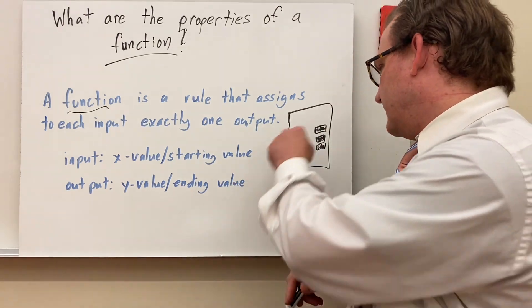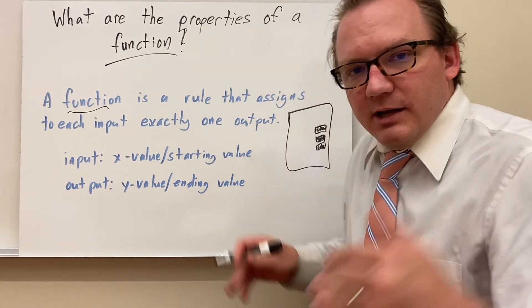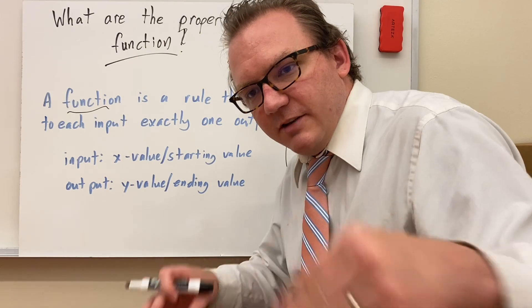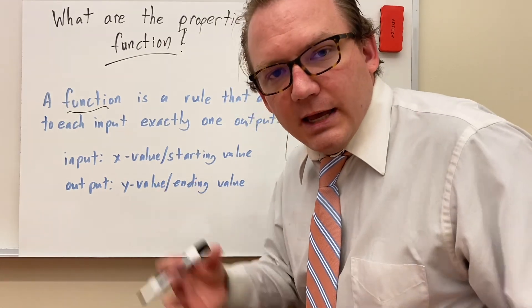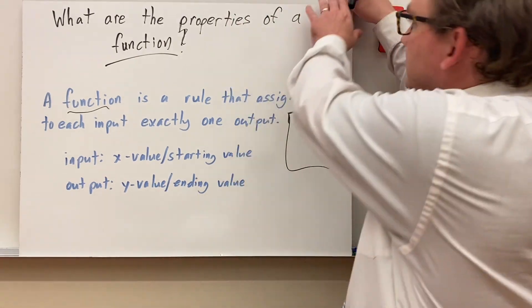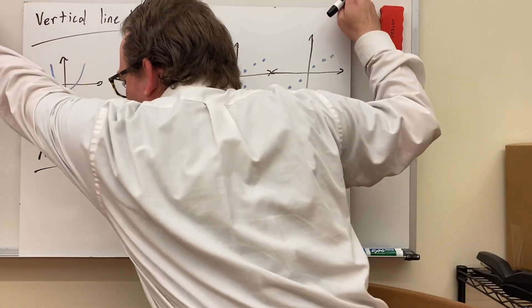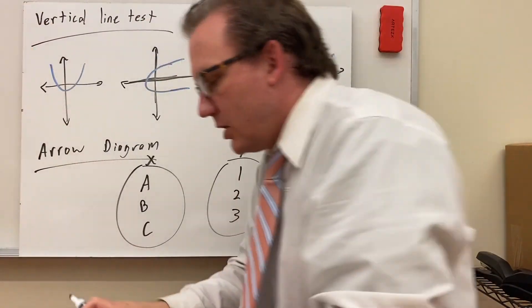Input is your x-value or starting value. Output is your y-value or ending value. So if I push the coke button, I get a coke every time. That is a function. If I push coke and I get something different, and it could be different every time, then it's not.